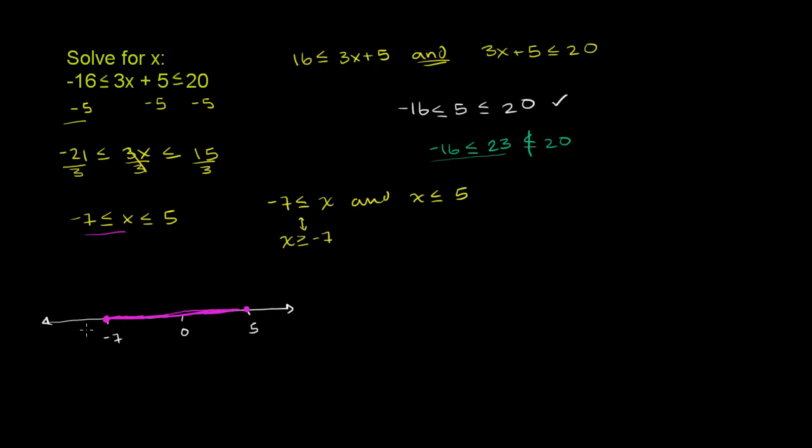You could also try it out with negative 8. Negative 8 also should not work. Let's try that out. If we have negative 16, we have negative 16 is less than or equal to, so if we put negative 8 here, this would be negative 24 plus 5. Negative 24 plus 5 is negative 19. Negative 19 is less than or equal to 20. Negative 19 is less than or equal to 20, but it is not greater than negative 16. So this is not true. So negative 8 also fails. So we're feeling pretty good about our solution.